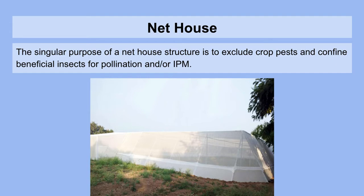Another low-tech type of greenhouse is called a net house. The singular purpose of a net house structure is to exclude crop pests and confine beneficial insects for pollination and/or integrated pest management. It consists of just insect netting that keeps out bad insects and keeps in the ones that you've paid for to actually perform a function on your crop.